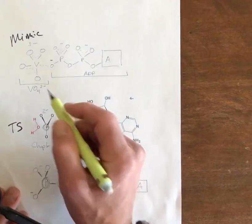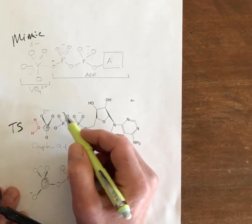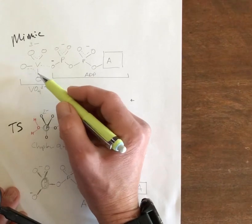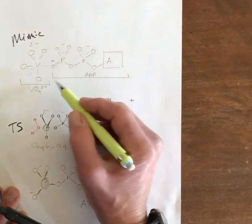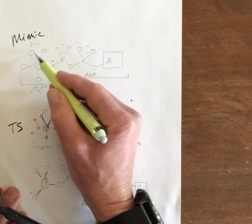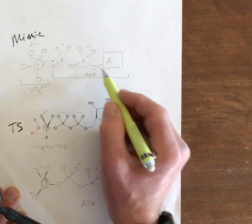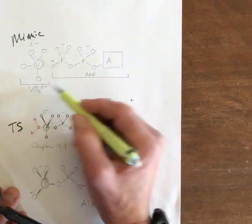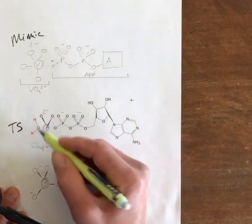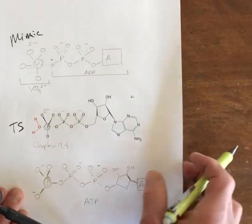Structural biologists want to see what structures look like at this point in the reaction. So instead of using the actual transition state, which is very unstable, they use a stable mimic that will persist for a long time. That's created by placing vanadate ion — vanadium attached to four oxygens, three negative charges — right next to a molecule of ADP. This vanadate-ADP structure allows us to see the situation when myosin has gotten to the transition state.